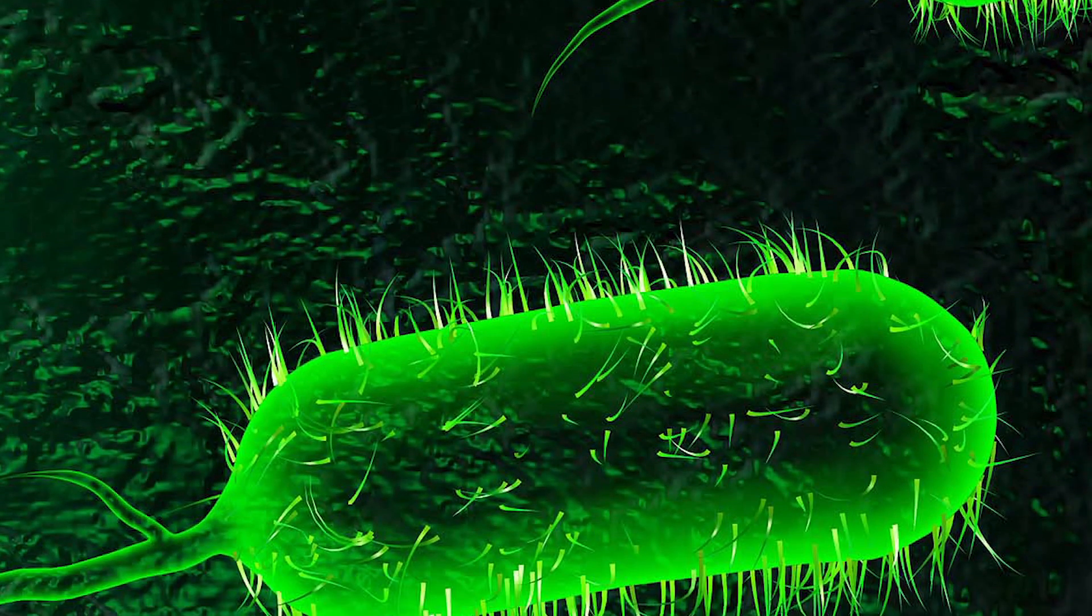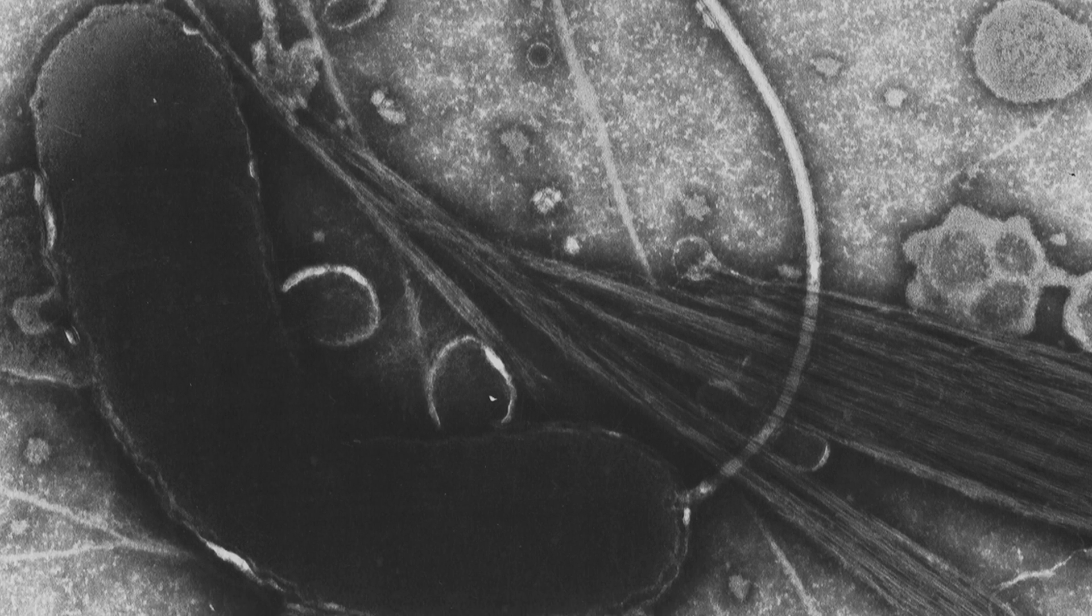My lab focuses on two bacteria that cause disease in humans. They're both intestinal pathogens, which means they cause diarrheal disease. One of them is called Vibrio cholerae. It causes the disease cholera, which is a profuse diarrheal disease. It's really dangerous because of how quickly it can cause death from dehydration—in 24 to 48 hours. It's really severe. It's primarily an issue in areas of the world where there's poor sanitation and lack of access to clean drinking water.